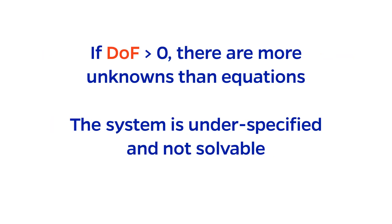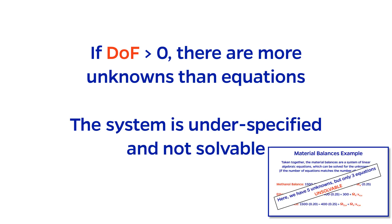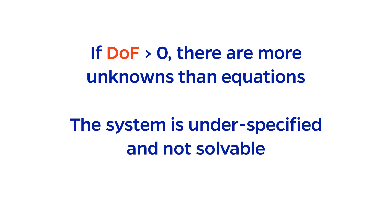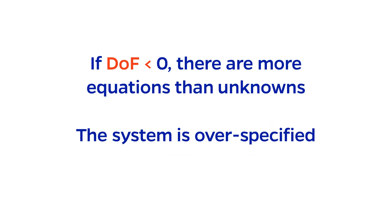However, if degrees of freedom is positive, the unknowns outnumber the equations, and the system is said to be underspecified. As we saw in an earlier episode, no solution exists for these types of problems unless you can obtain some more information in the form of givens or other equations. Underspecified problems have no unique solution, so I would generally not recommend attempting to solve them.